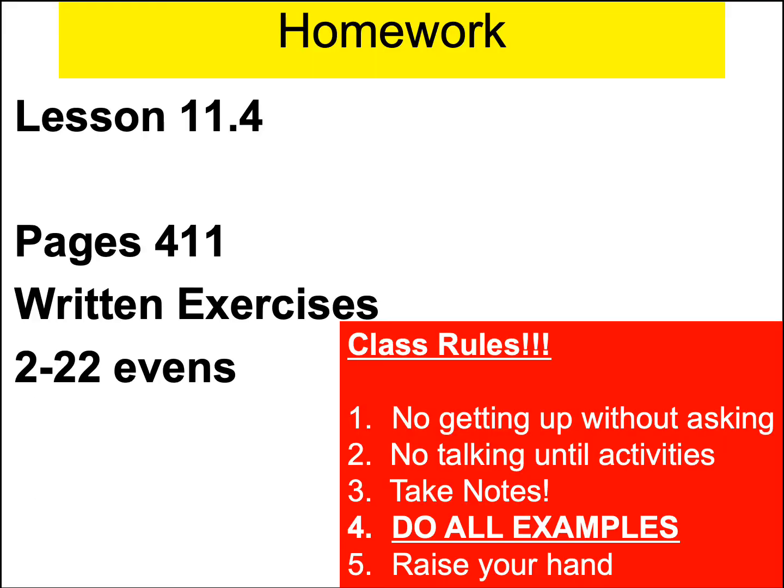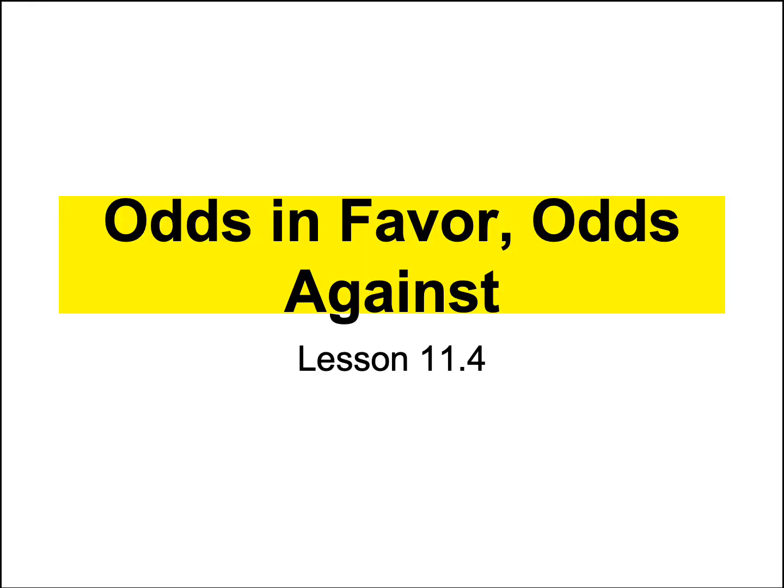Here's your homework for tonight — copy it down please. Last class we did probability, and I mentioned that probability is not the same as odds. You've probably heard this before: 'What is the chance of this occurring? What are the odds? What is the probability?' All three are words we use to describe calculating the likelihood of an event occurring. Last class we did probability — it has its own unique formula. Now we're going to do odds, which has its own unique formula. Do not confuse the two.